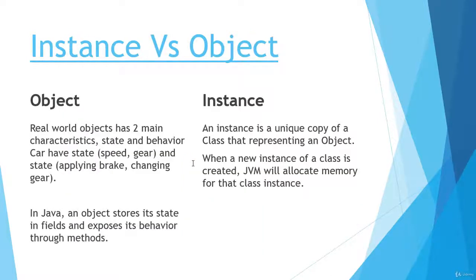Now let's compare instance with the object. Real world objects have two main characteristics: state and behavior. For example, a car object has states like speed and gear, and behaviors like apply brake and change gear. In Java, an object stores its states in fields, or instance variables, and exposes its behavior through methods.